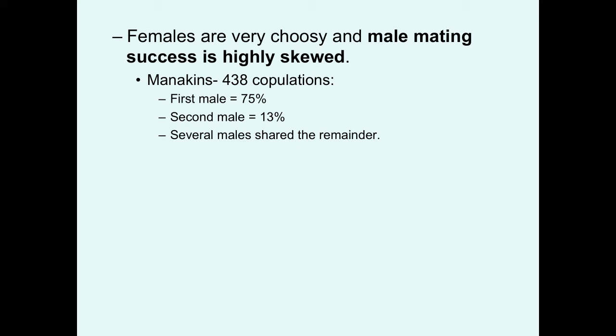In a study of manakins, of 438 copulations witnessed at one lek, a single male — the alpha — received 75% of copulations, the beta male received 13%, and various other males shared the remaining 12%.